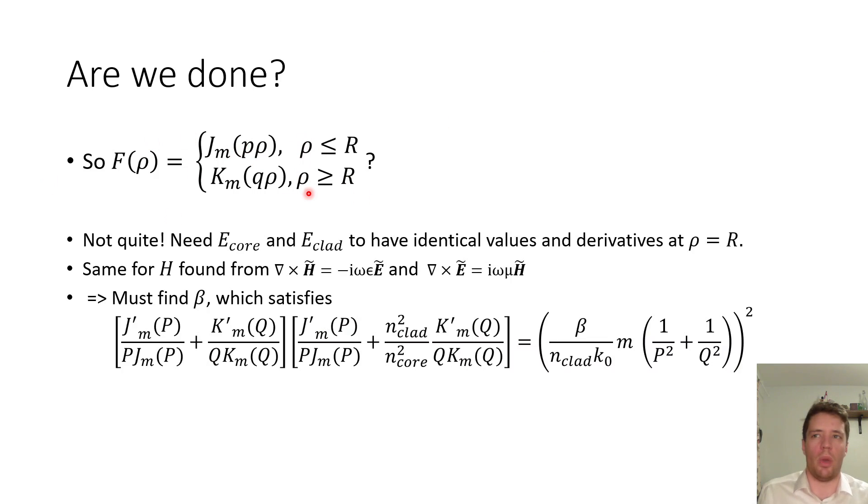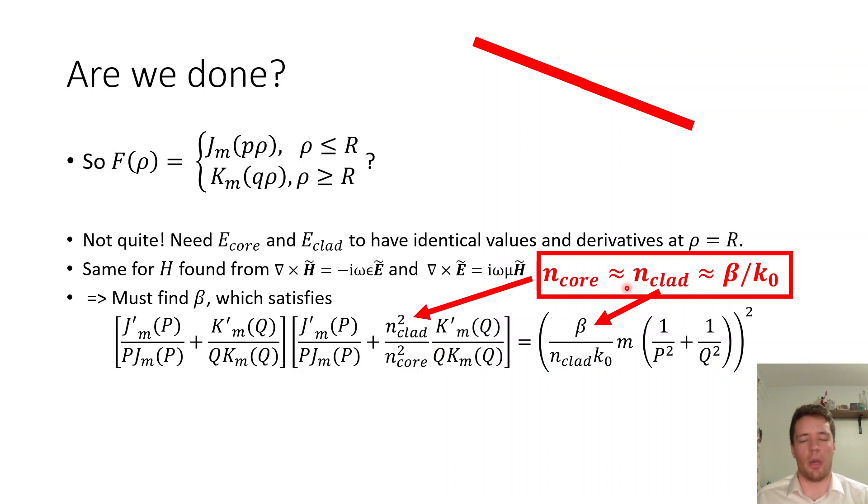So are we done already, can we just say that this is the radial distribution of the field and we're finished? Well not quite because we need to ensure that the electric field inside the core and the cladding have the same value exactly at the core cladding interface but also identical derivatives at this interface and the same must be true for the h field and the components have to be related using Maxwell's equations.